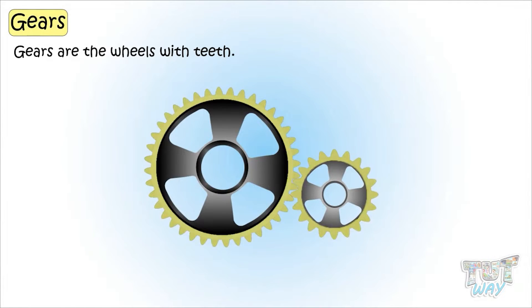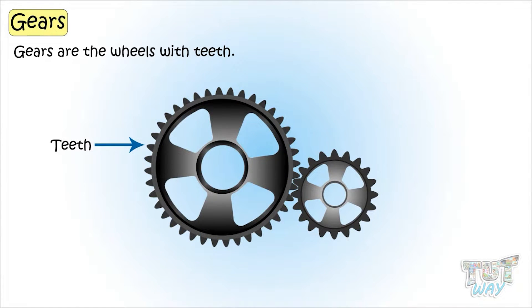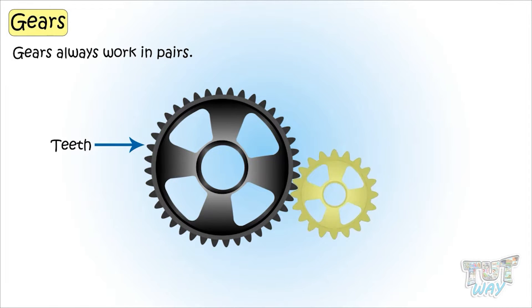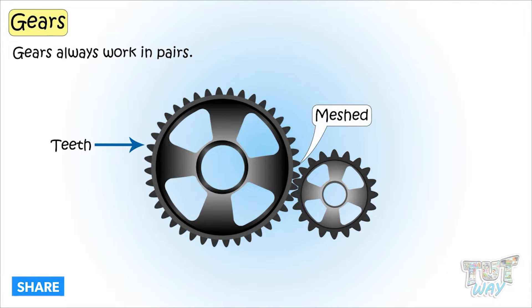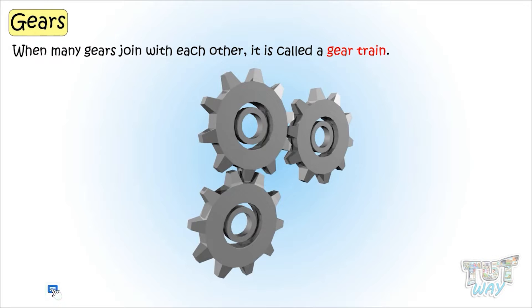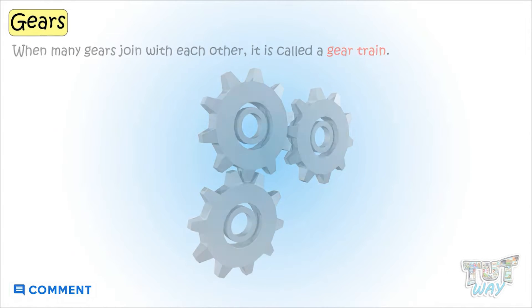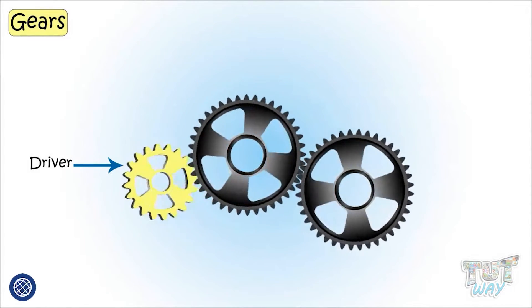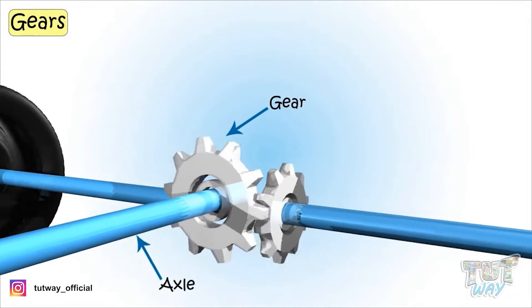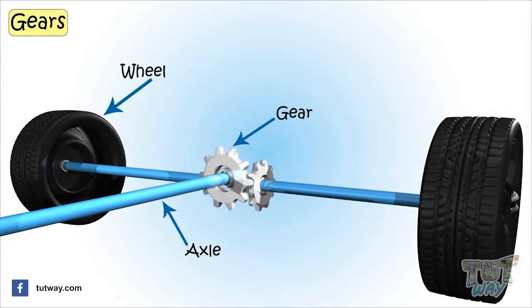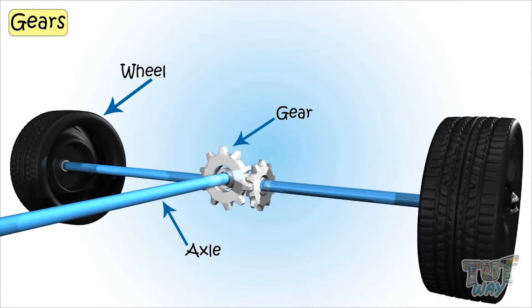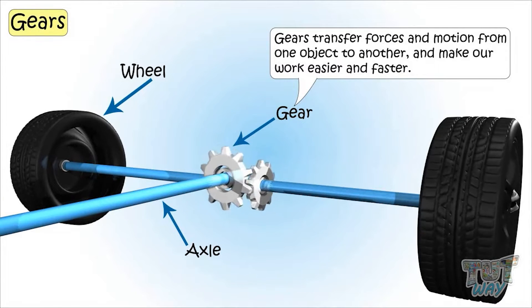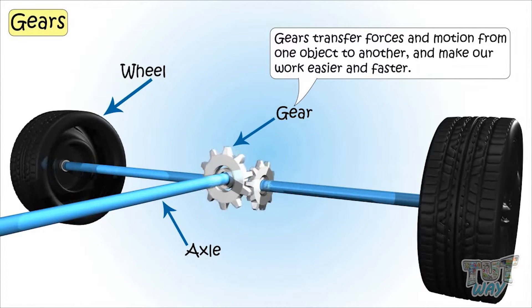Gears are wheels with teeth and always work in pairs. Teeth of one gear interlock with the teeth of another gear — they are meshed. Many gears joined together is called a gear train. The driver is the first gear that starts the movement. Gears turn on the axle, which in turn turns the wheel of the object to be moved. So gears transfer forces and motion from one object to another, making our work easier and faster.